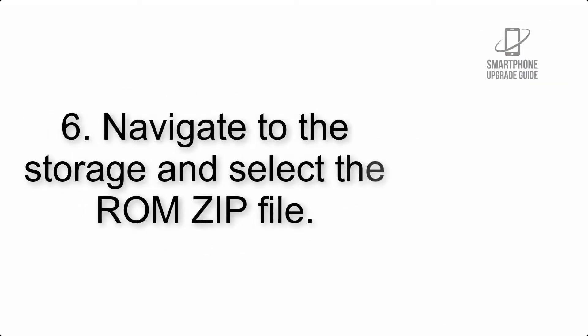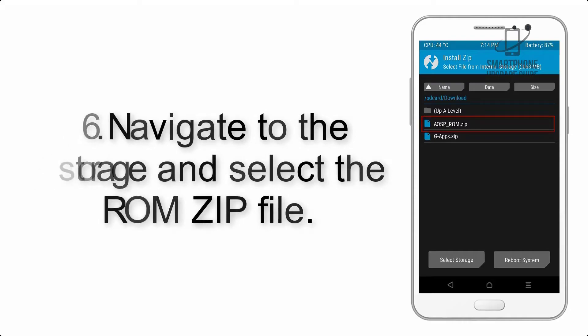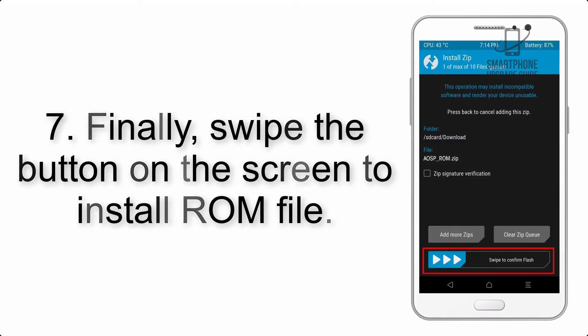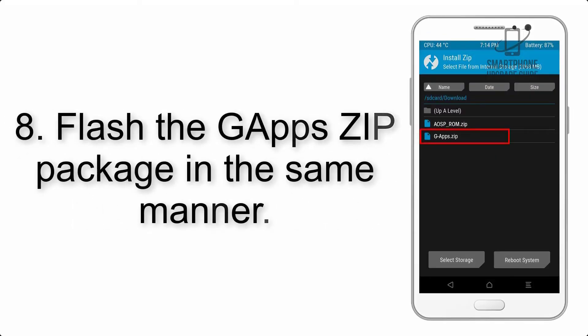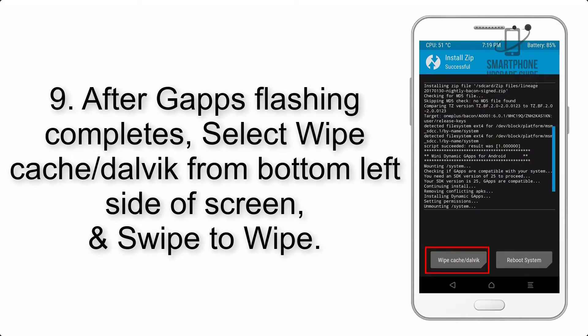Step 5: Go back to the recovery main screen and tap on the Install button. Step 6: Navigate to the storage and select the ROM zip file. Step 7: Swipe the button on the screen to install the ROM file. Step 8: Flash the G apps zip package in the same manner.